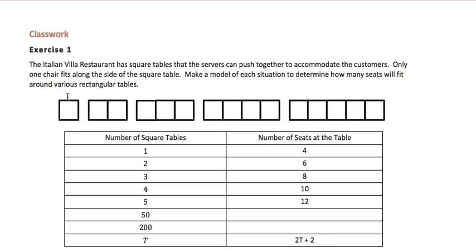So if I have 1 table, I have 2 times 1 for these long sides, plus 2 more, which is 4. If I have 2 tables, I have 2 times 2 because my long side is 2 each, plus 2 more, which is 6. When I have 3 tables, my long side is 3, 2 times 3, which is 6, plus 2 more, which is 8.